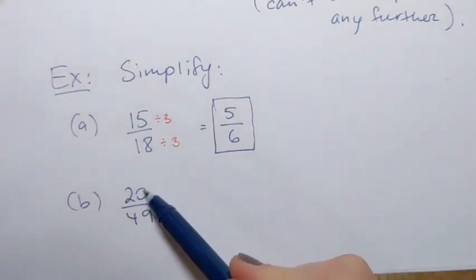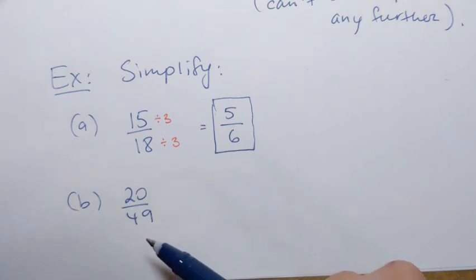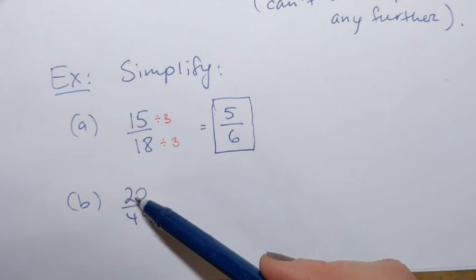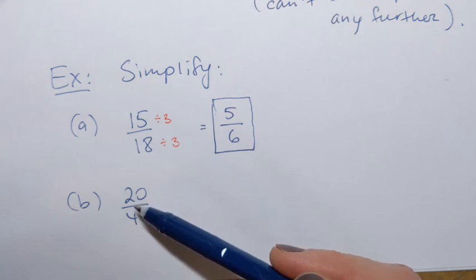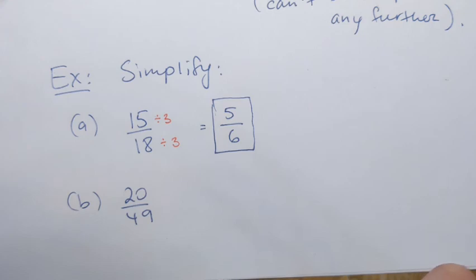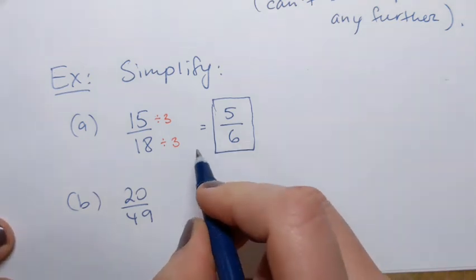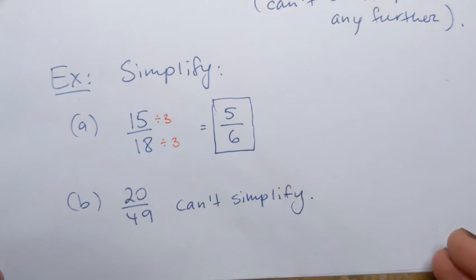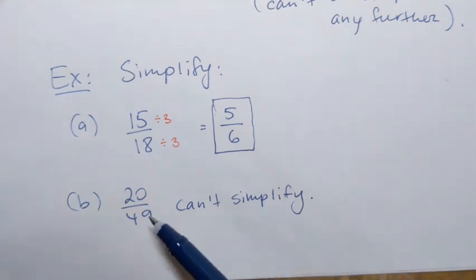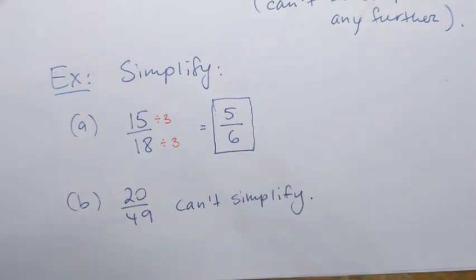How about 20 over 49? If we try to find a number that divides both 20 and 49, we won't find one. I can divide 20 by 2, 5, 4, 10, or 20 itself, but none of those numbers divide 49. That means this fraction is already in lowest terms — we can't simplify it further. Not every fraction can be simplified, but if you can simplify a fraction, you should. All final answers should be given as fractions in lowest terms.